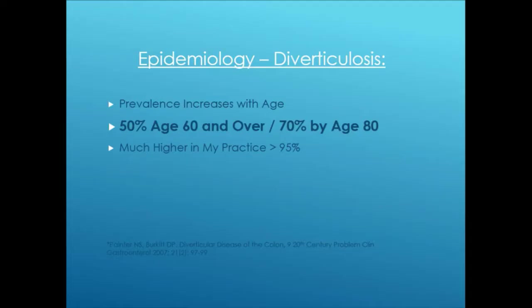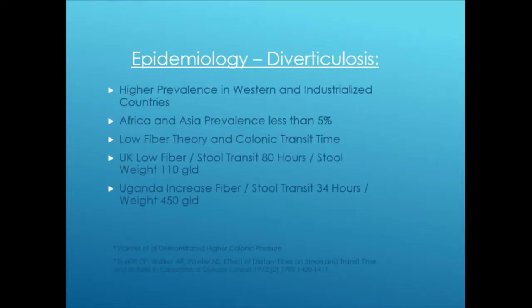The prevalence of diverticulosis increases with age — about 50% at age 60 and over, and 70% by age 80. It's higher in Western and industrialized countries; in Africa and Asia it's very small. Studies comparing the UK diet to the Ugandan diet found that with low fiber, stool transit time is about 80 hours and stool weight is 110 grams, while in Uganda with high fiber, transit time is 34 hours and weight is 450 grams.